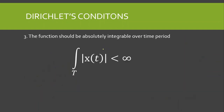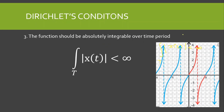The third and final Dirichlet condition is that the signal should be absolutely integrable over the time period. This means we take the absolute value of x(t) and integrate over the time period — if we get a finite value, we can apply Fourier series. An example of a non-absolutely-integrable signal is the tangent function, which approaches infinity at some values, so its integral over the period is not finite, and Fourier series cannot be applied despite it being periodic.